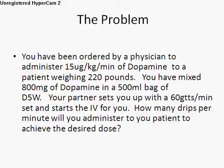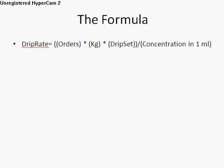The first thing you want to do when you encounter a drug calculation problem is to carefully read the problem to determine what exactly the question is asking you for. This one is asking us to solve a dopamine drip, so we will proceed from there. We need to select the correct formula, and for dopamine it is the doctor's orders in micrograms, multiplied by the patient's weight in kilograms, multiplied by the drip set, divided by the concentration of dopamine in one milliliter.